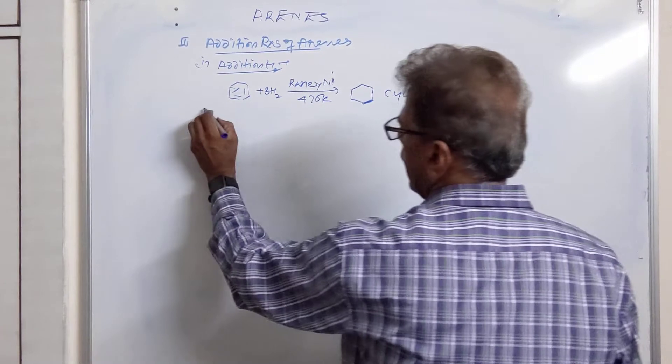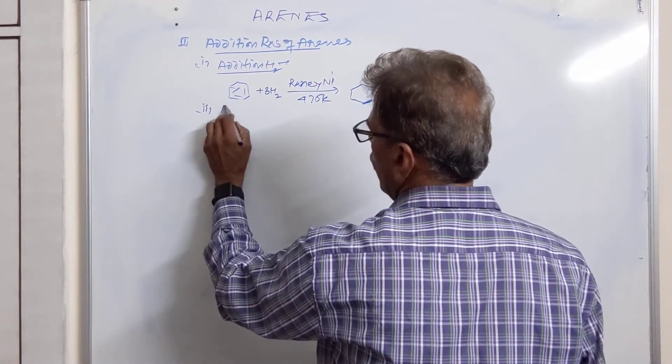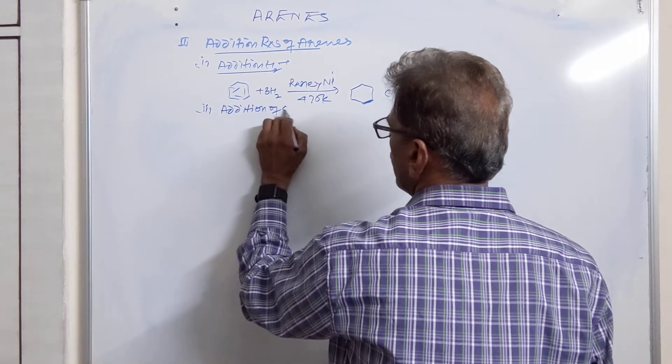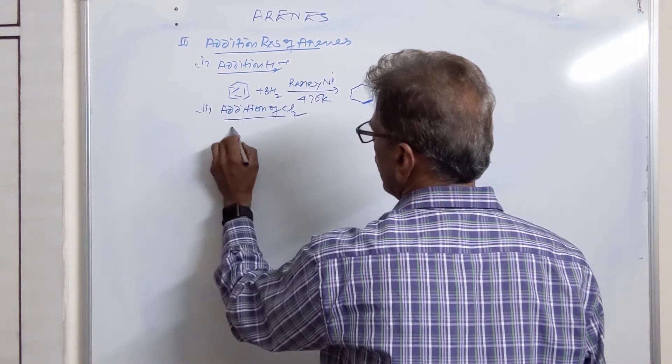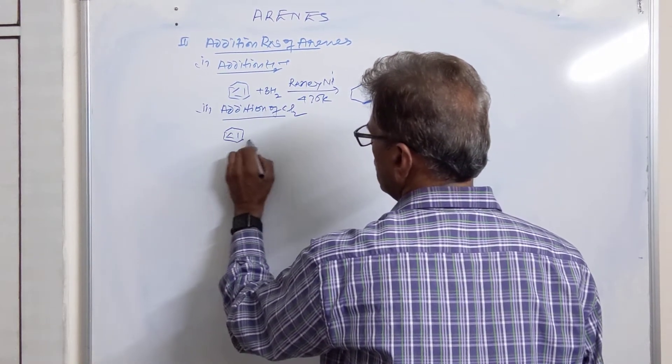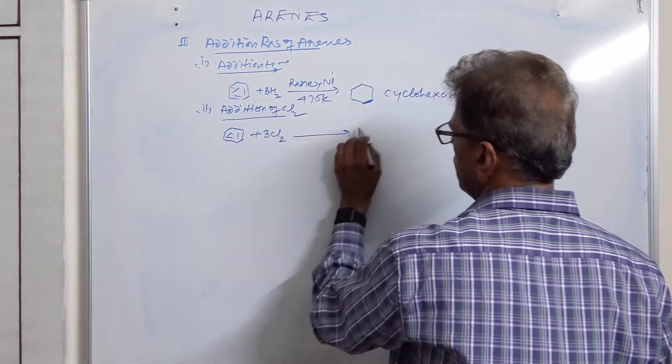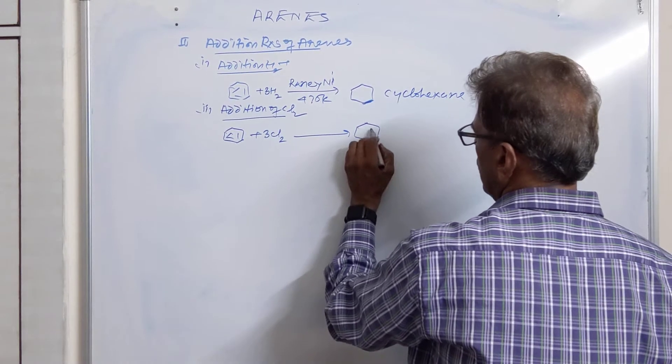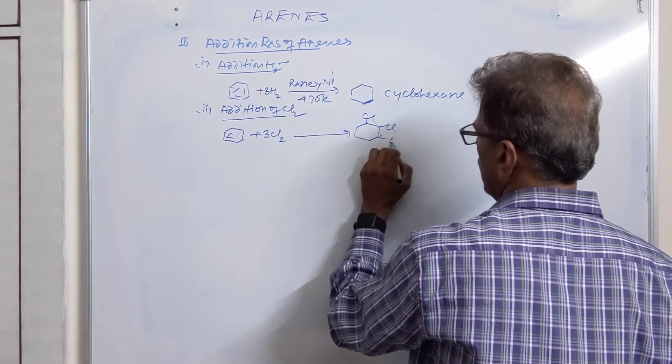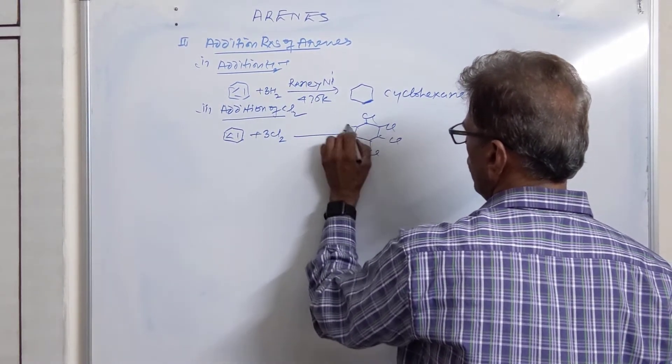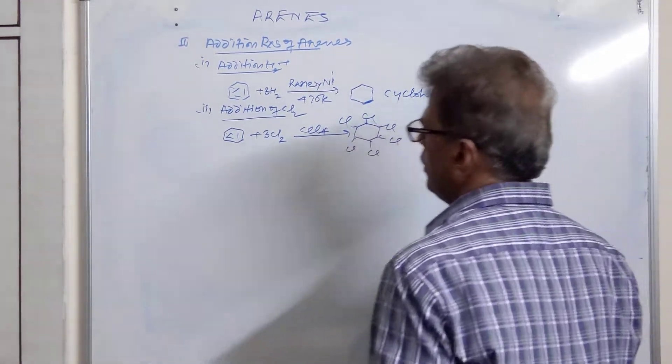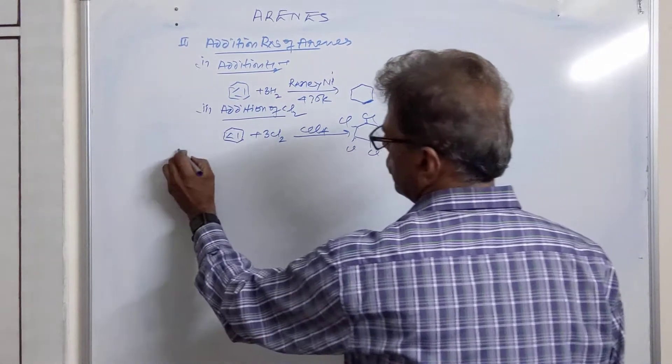Then we have second reaction, that is addition of chlorine. Then it adds three molecules of chlorine in the presence of CCl₄ or inert solvent. It adds three molecules.